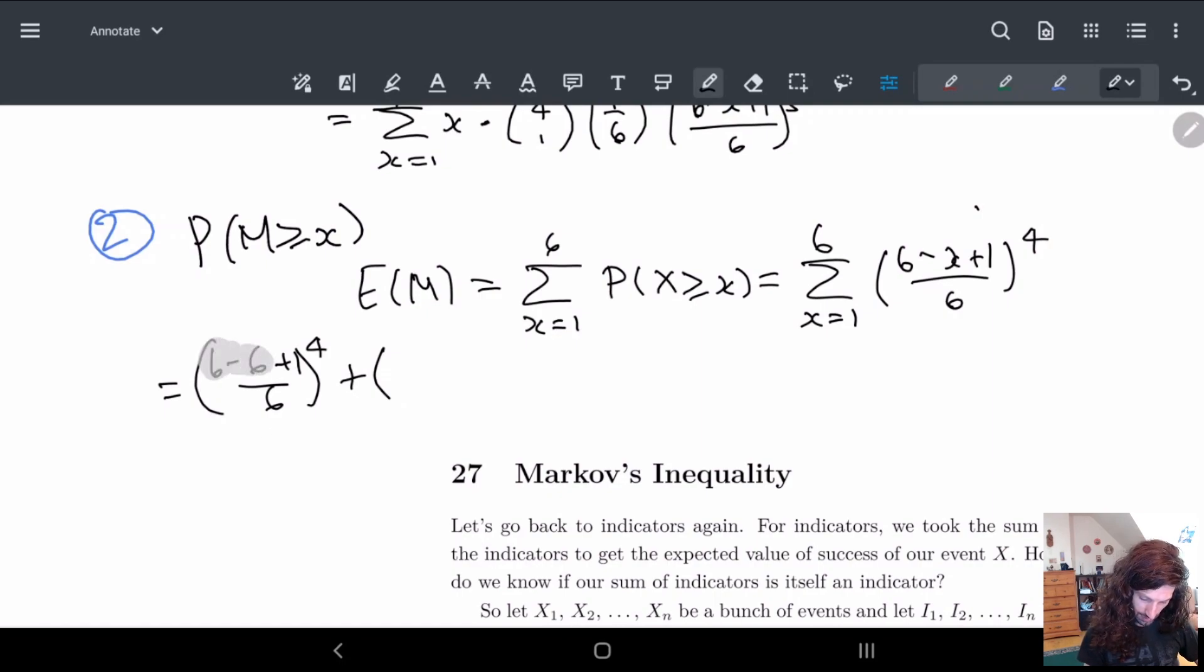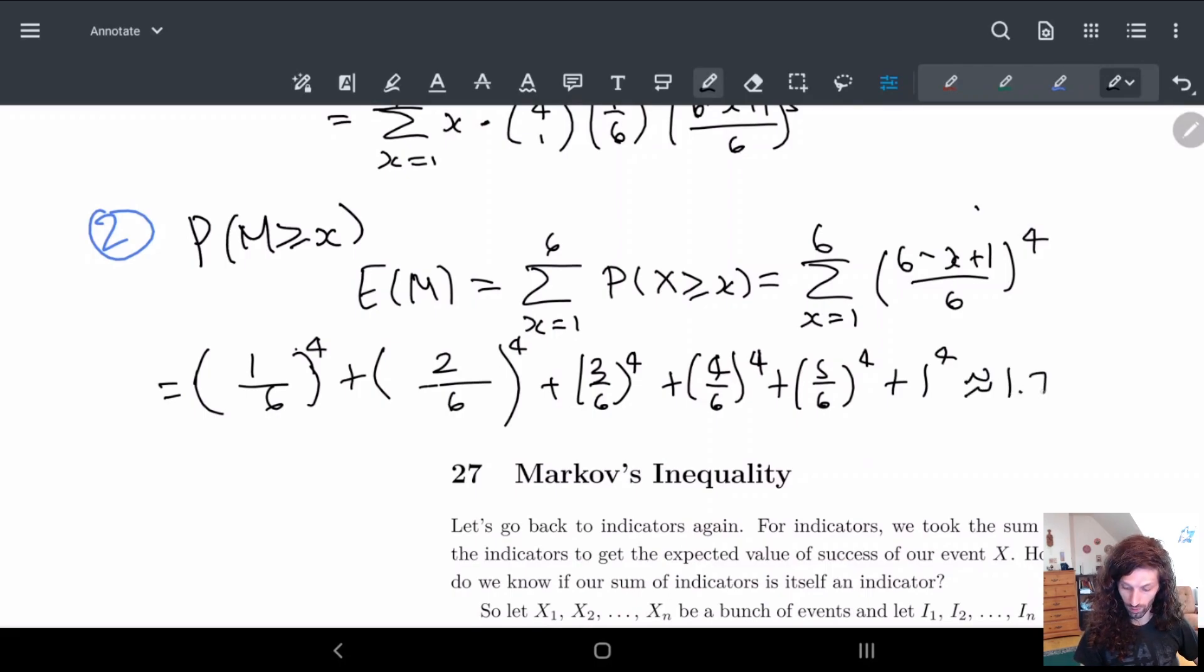So really, we just have 1 sixth to the fourth. And then we get 6 minus 5 plus 1 over 6. So 6 minus 5 is 1 plus 1 is 2. So really, again, we have just 2 here. So this is actually turning out to be easier than we thought. So I'm going to assume this is 3 over 6 to the fourth plus 4 over 6 to the fourth, right? So this is much, much easier. Look how nicely, look how much nicer this breaks out.